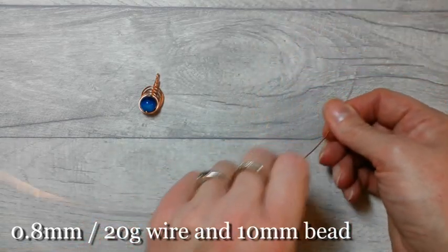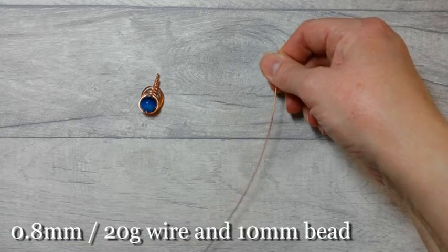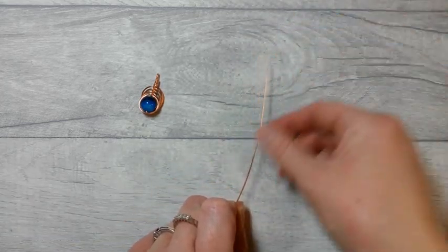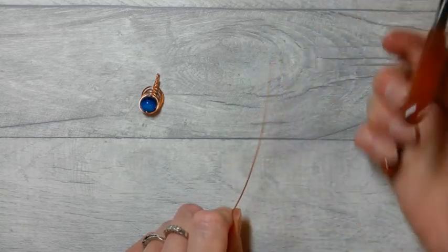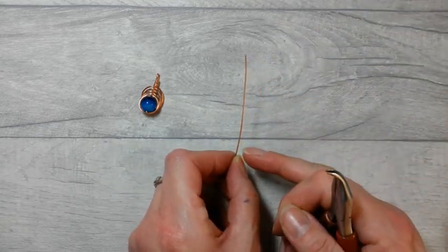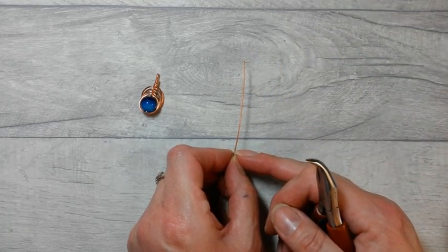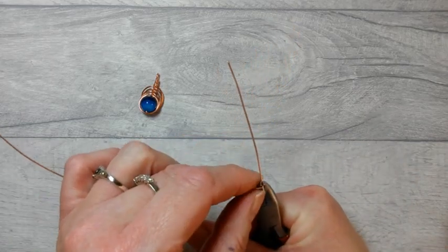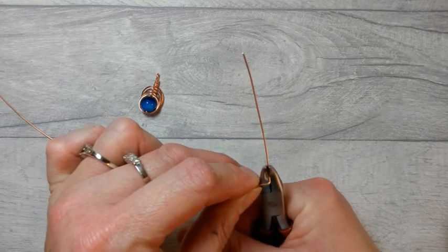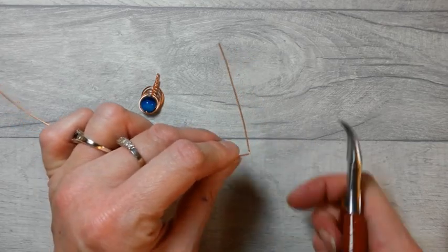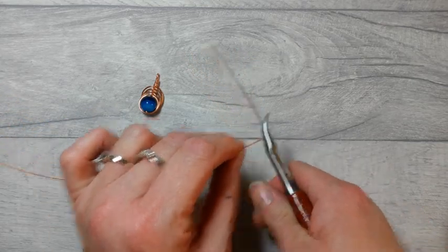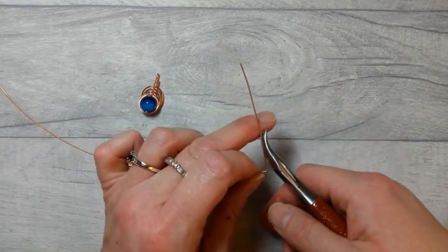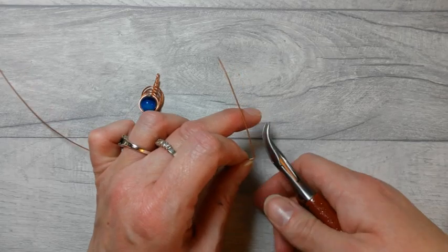You don't need quite as much when you're working with a finer gauge wire because of the way that it twists and turns. So I'm going to demonstrate this technique for you now using the same 10 millimeter bead but using some 0.8 millimeter or 20 gauge wire. I'm just going to put some heat through there, there's probably about 11 inches which is far more than we need.